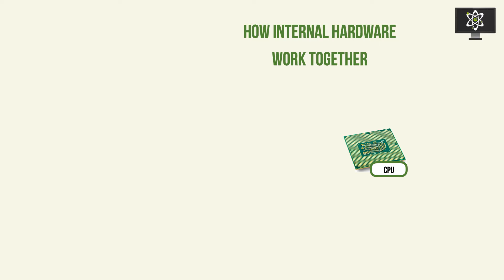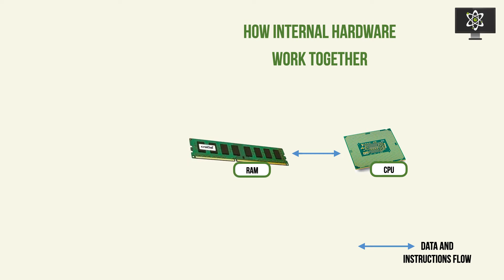Where does the CPU get this data from? I'm going to introduce this little data and instructions flow bilateral arrow here. So it gets the information and transmits the processed information to the RAM. This is where it primarily gets and transmits the information. And where does that information come from? It comes from the other components, the other devices within your computer. So for instance, if you're loading an application that is installed on your hard disk, it gets that information to be processed by the CPU via the RAM from the hard disk.